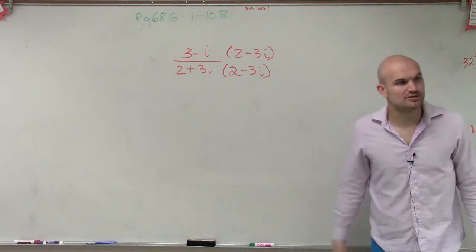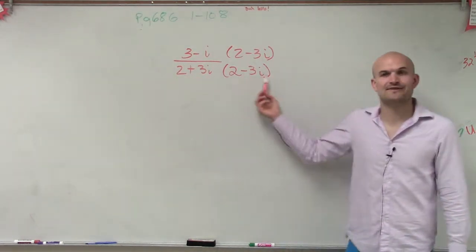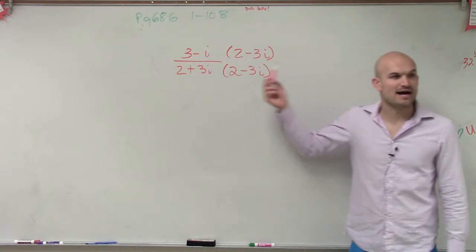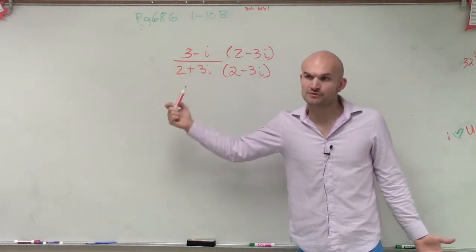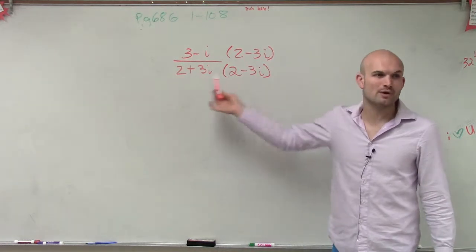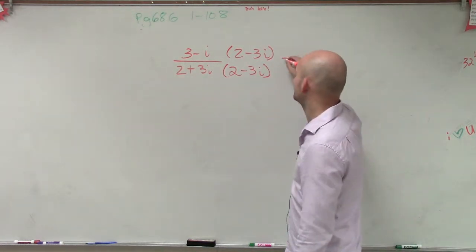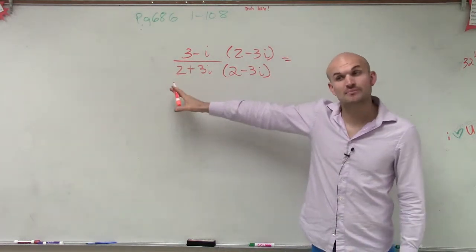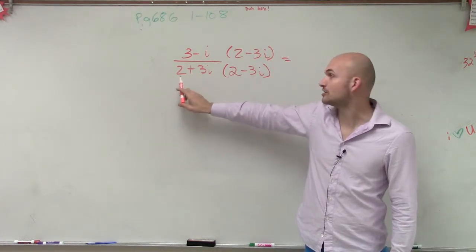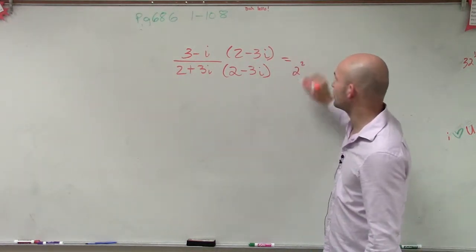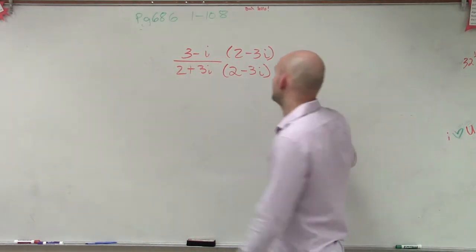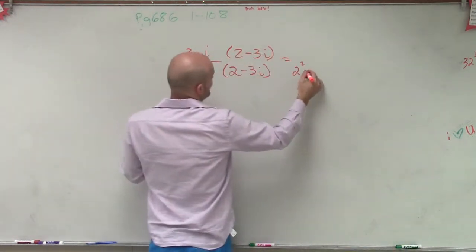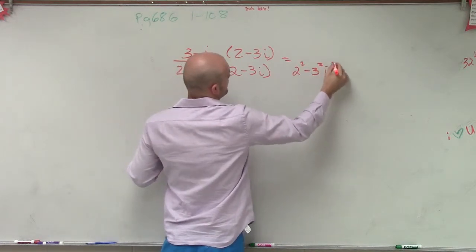Then what I'm going to do is now, hopefully you guys understand that this is a difference of two squares. Any binomial multiplied by its conjugate is a difference of two squares. So therefore, I can quickly multiply this out. Remember, the difference of two squares, the middle terms cancel out. So really, all I need to do is multiply my first two terms, which is 2 squared, and then multiply these two terms, which is going to be negative 3 squared i squared.